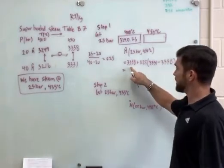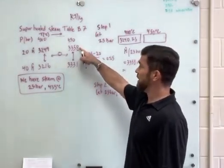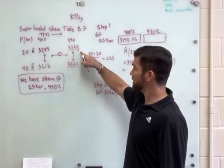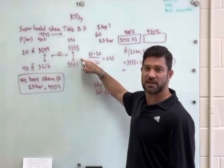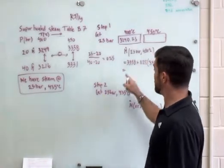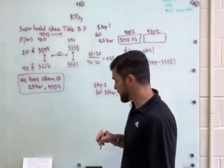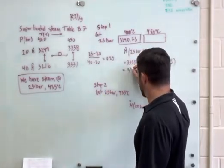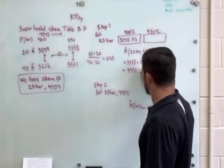Okay, so what I'm doing is I'm starting from this value and I'm just adding a quarter of this difference because that's where my pressure is. And so if I go ahead and quickly do this math in my head, I get 3351.25.